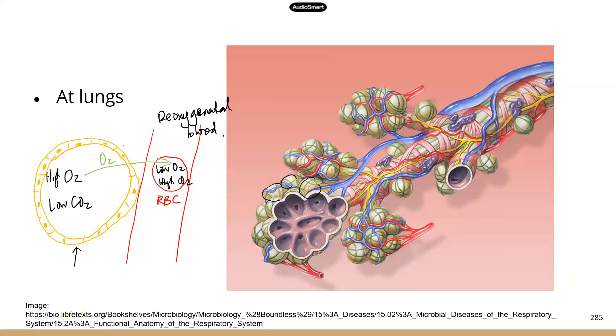And the carbon dioxide is going to leave the red blood cells, cross the capillary walls, cross the walls of the alveoli into the airspace. So this is how carbon dioxide moves.